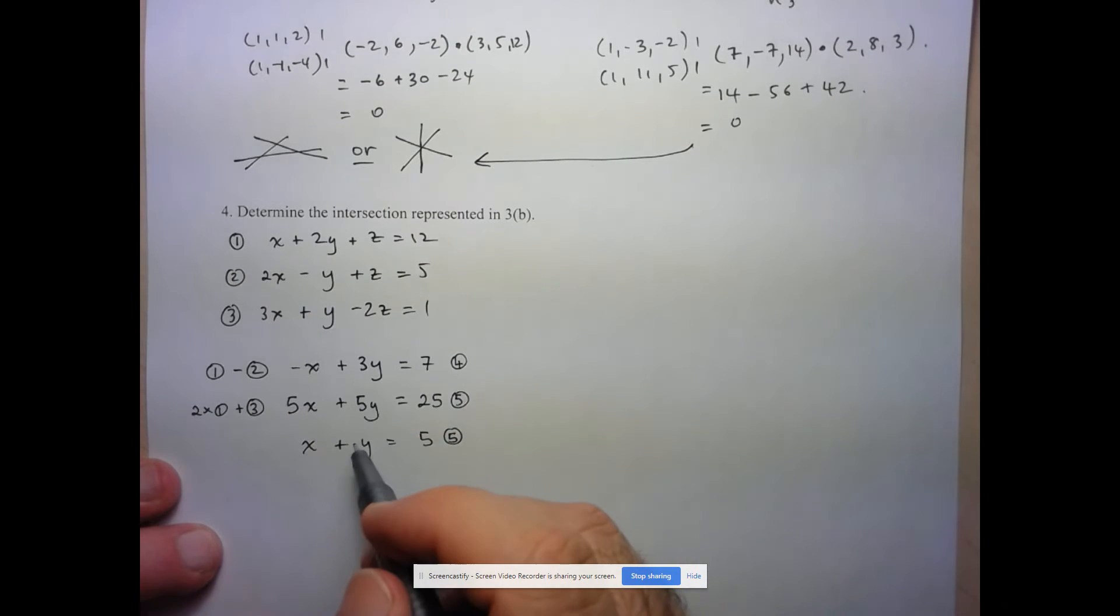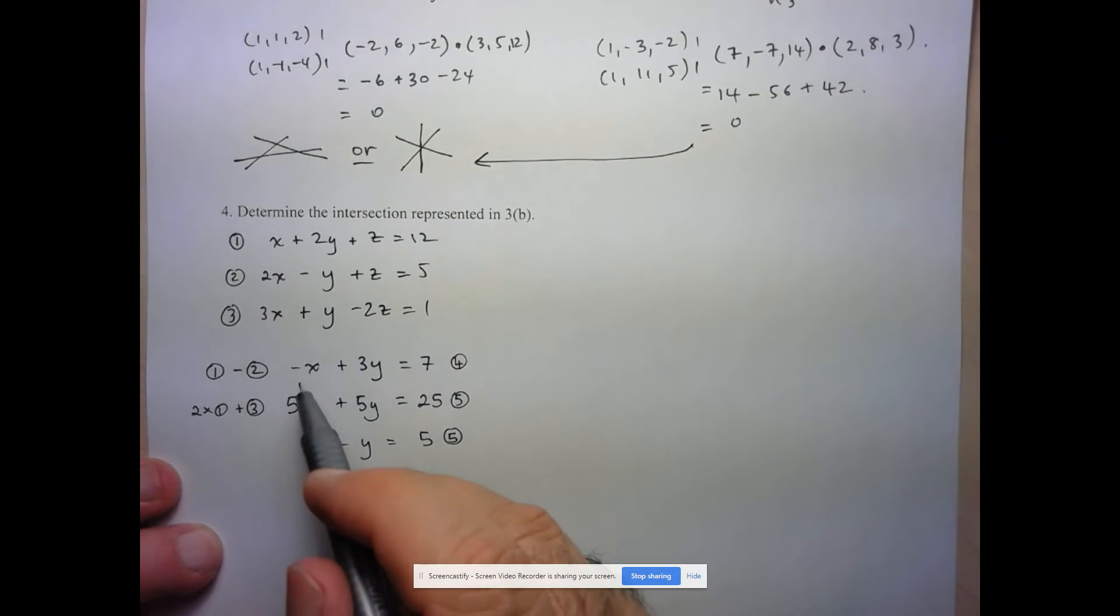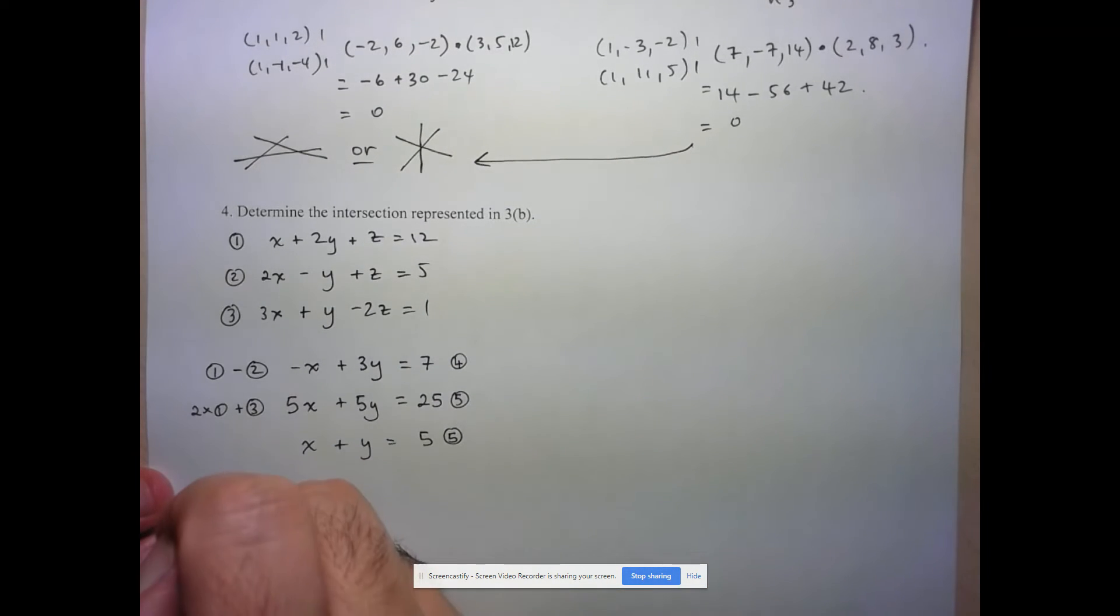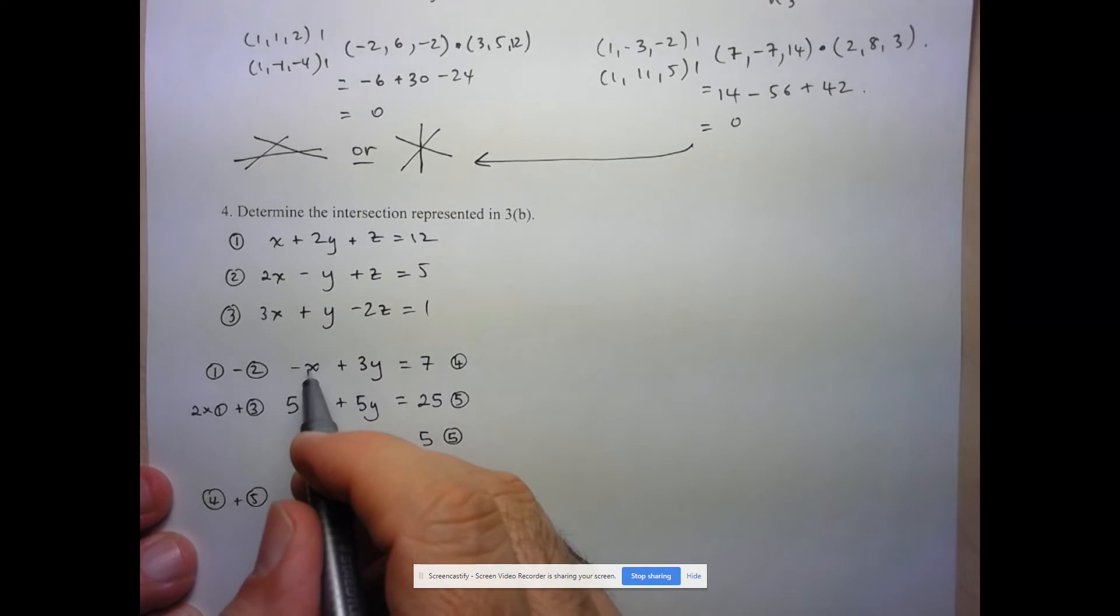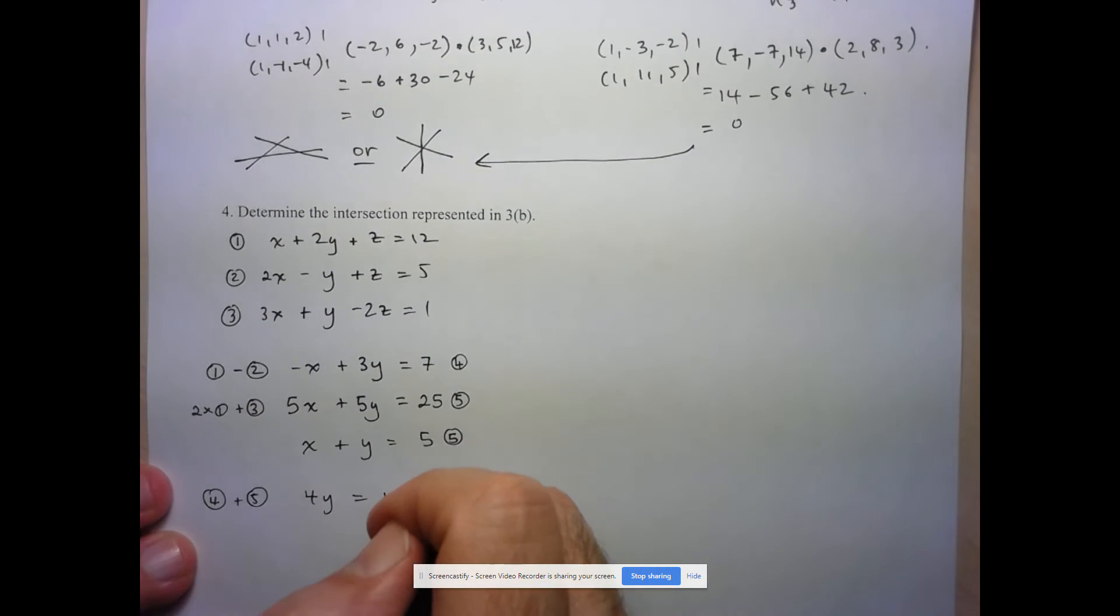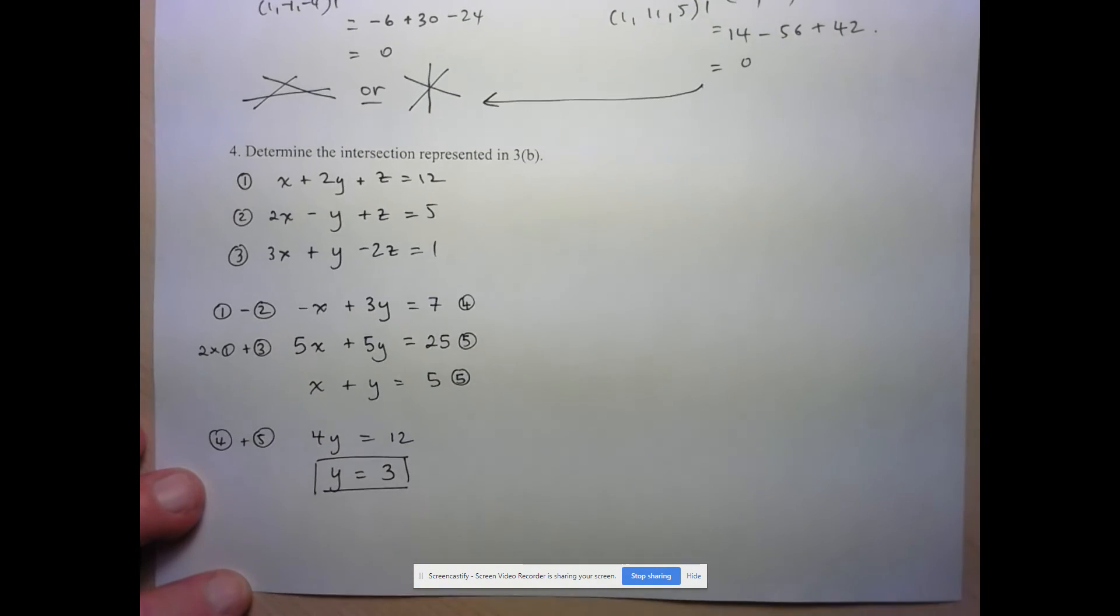And now I see a very easy way to solve this system of equations because they both have, one has x and one has negative x. So all I have to do is take equation 4 and add it to equation 5, and that's going to eliminate the x variables. So what are we left with? 3y plus y is 4y equals 7 plus 5 is 12. And look what I can now do.